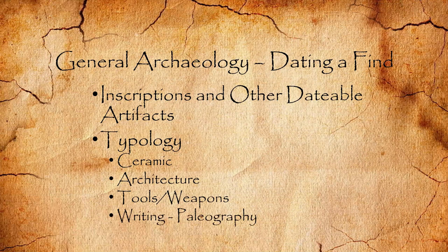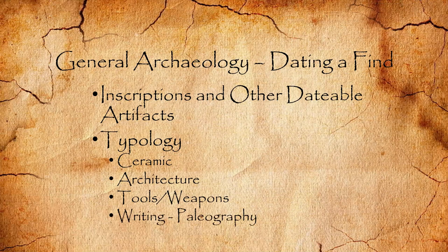Sometimes the writing is what helps us out in terms of dating the artifacts. We have paleography, which is the study of ancient writing. You have here several different examples of lettering styles of ancient Greek, and those different lettering styles would have been prevalent at different timeframes. If you're able to narrow it down to those timeframes, the lettering style of a document or inscription may be able to give you a range of dates when that inscription was actually made.